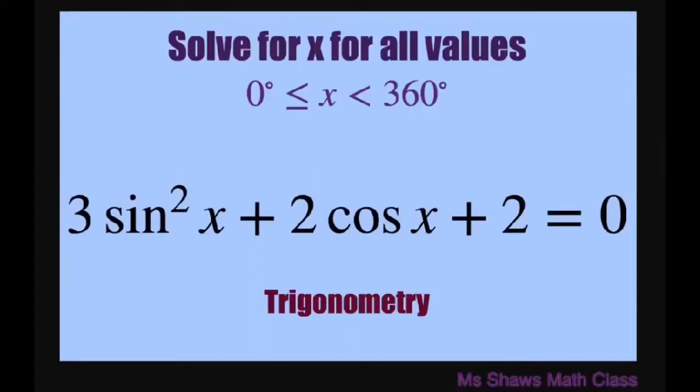Hi everyone. We're going to solve for x for all values of x from 0 degrees to 360 degrees for 3 sine squared of x plus 2 cosine of x plus 2 equals 0.